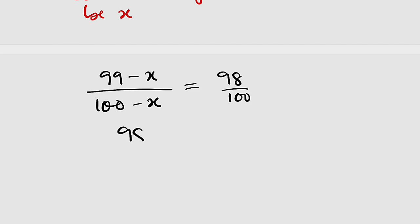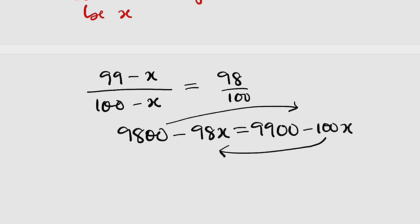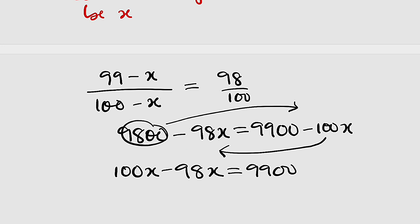Now let us cross multiply. 98 times (100 - x) gives us 9800 - 98x, and this equals 100 times (99 - x), which gives us 9900 - 100x. Bringing terms across: 100x - 98x equals 9900 - 9800.